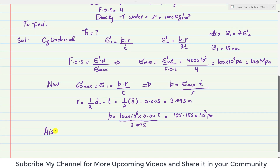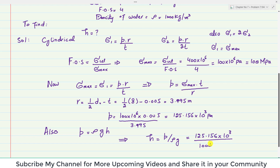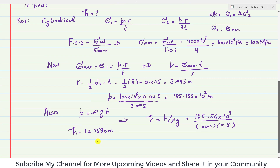We also know that pressure due to fluid is P = ρ·g·H, so we can find height H = P / (ρ·g). Substituting: H = 125,156 / (1000 × 9.81), which gives H = 12.758 m, or approximately 12.76 m.